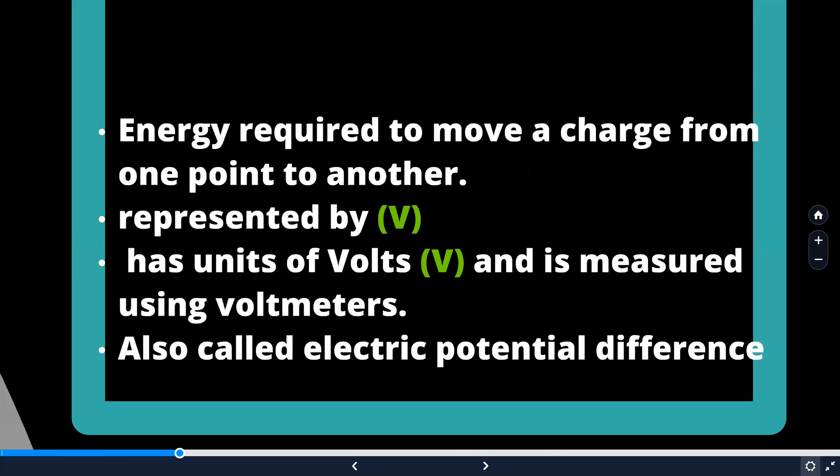So if something is written like voltage equal to 25V, you can read it as voltage equal to 25 volts. The measuring instrument used to measure voltage is voltmeter. Voltage is otherwise known as electric potential difference.